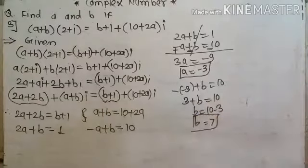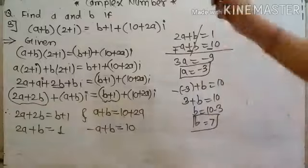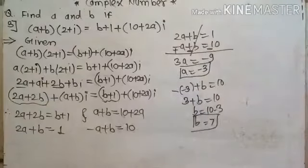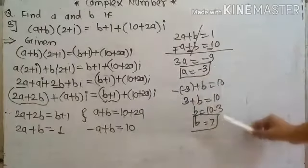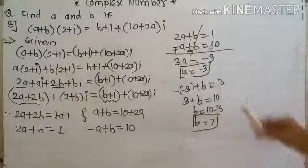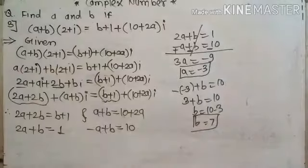By comparison, using equality of complex numbers, we get a is equal to minus 3 and b is equal to 7.